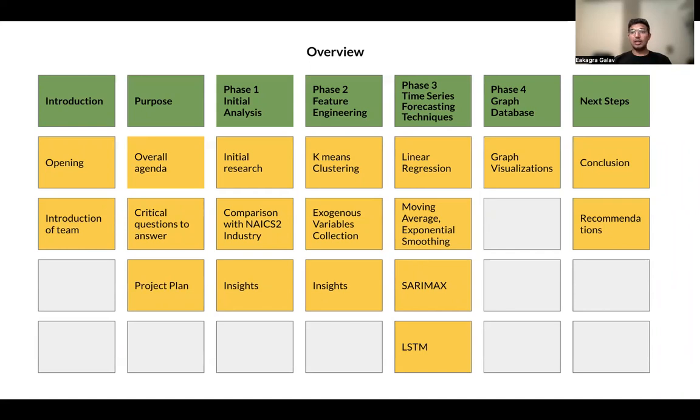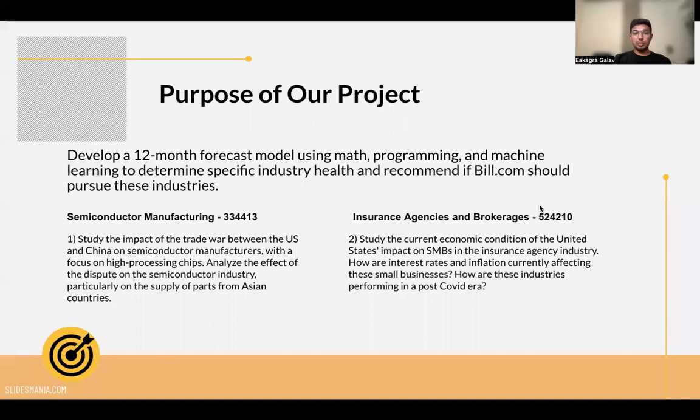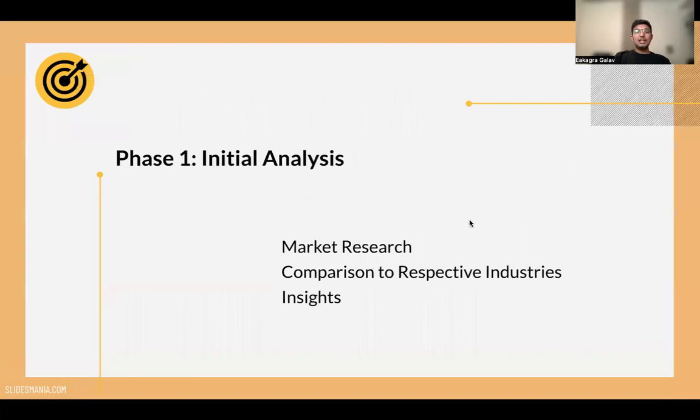To start with, this is the main purpose of our project where we are developing a 12-month forecasting using different machine learning programming and math techniques. These are the two NAICS-6 codes we have selected: one is semiconductor manufacturing, and another one is insurance agencies and brokerage.